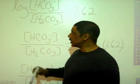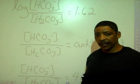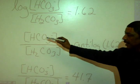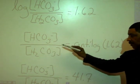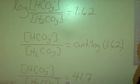At this point, we should clear the log on the left side by taking the antilog of both sides. That will give me concentration of anion over concentration of acid is equal to the antilog of 1.62.